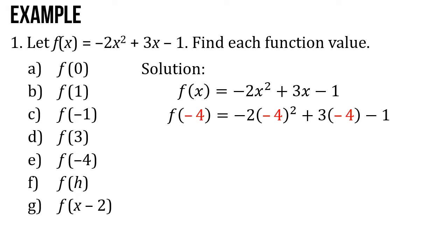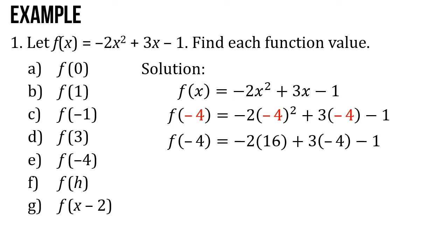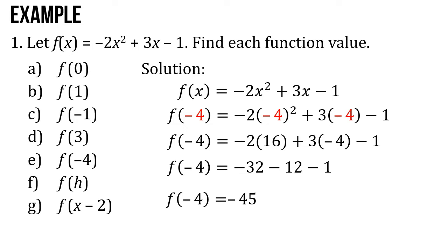Then let's try if x is equal to negative 4. f of negative 4 equals negative 2 times negative 4 squared plus 3 times negative 4 minus 1. So f of negative 4 equals negative 2 times 16 plus 3 times negative 4 minus 1. f of negative 4 is equal to negative 32 minus 12 minus 1. So f of negative 4 is equal to negative 45.